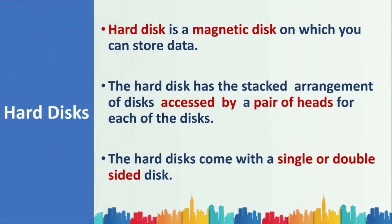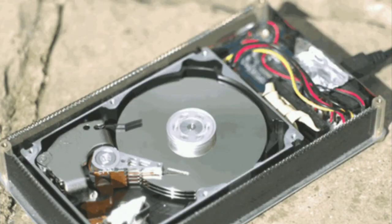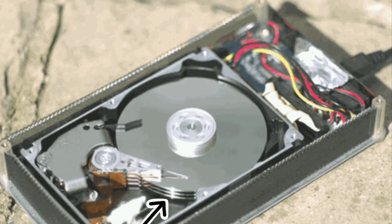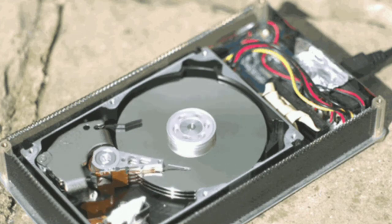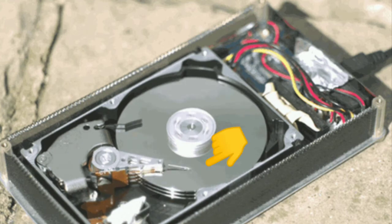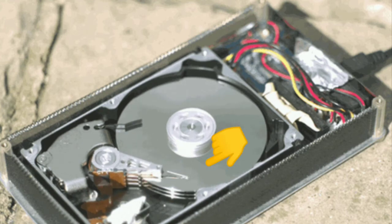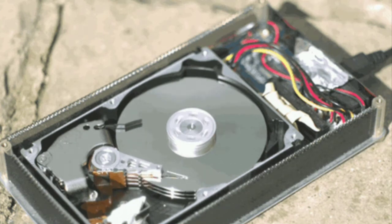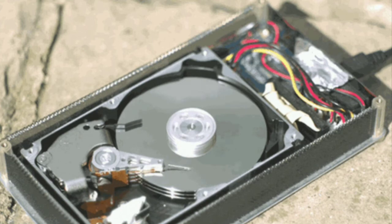Now let's move on to secondary storage devices. The first is the hard disk — a magnetic disk on which you can store data. Hard disks use a stack arrangement where disks are placed one over the other. Each disk has a pair of heads used to access the disk, and the hard disk comes with single or double-sided disks.